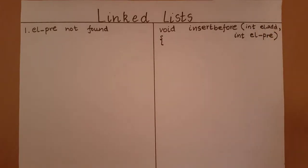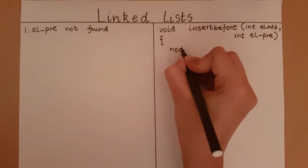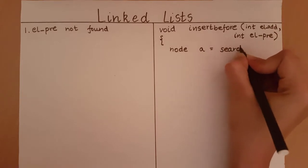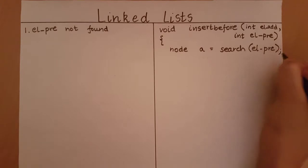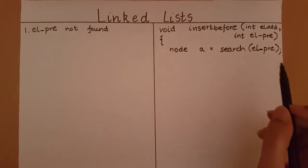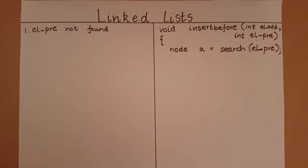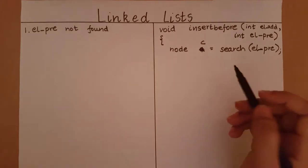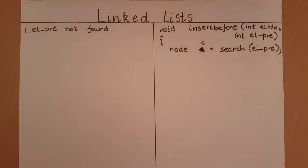We have already taken a look at how to write a search function for a linked list. In short, this search function is going to search for the element given in the parameter and will return the node which stores that particular element. If such a node is not found, it will return a null value. So the first thing we do is call the search function and store the result in a node variable which we call c.